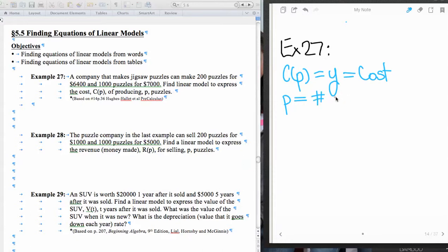And so what we're looking at is information given as ordered pairs from words. So this is the number of puzzles here. A company that makes jigsaw puzzles can make 200 puzzles, well, 200 is information about the P. And for $6,400, that's a total cost, so that's our y value there. And so we're given one ordered pair there. And then they can make 1,000 puzzles for $7,000. And that's our y there.